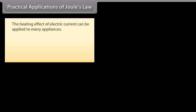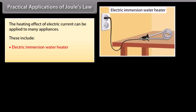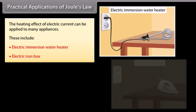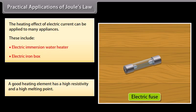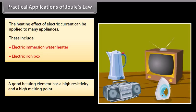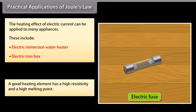Practical Applications of Joule's Law. The heating effect of electric current can be applied to many appliances, including electric immersion water heaters and electric iron boxes. A good heating element has a high resistivity and a high melting point. For example, an electric fuse is an example of the heating effect of electric current. The rating given as 3A of an electric fuse states that the maximum current it can sustain is 3A.